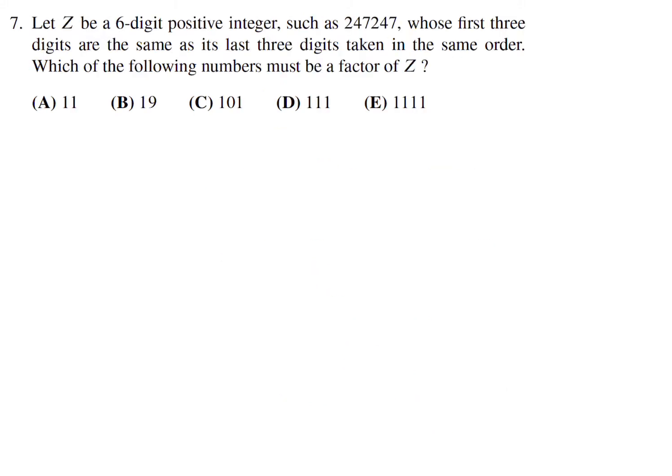Let Z be a 6-digit positive integer such as 247,247, whose first 3 digits are the same as its last 3 digits taken in the same order. Which of the following numbers must be a factor of Z?